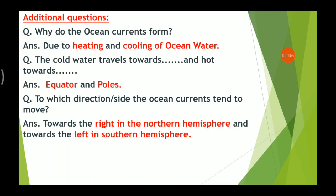The cold water travels towards equator and hot water towards poles. To which direction or side do the ocean currents tend to move? In the northern hemisphere to the right, and in southern hemisphere to the left.